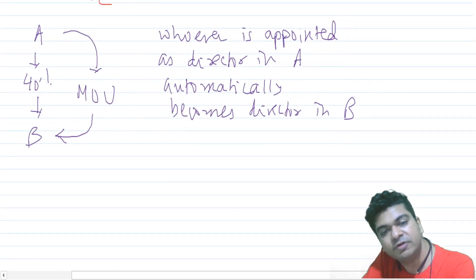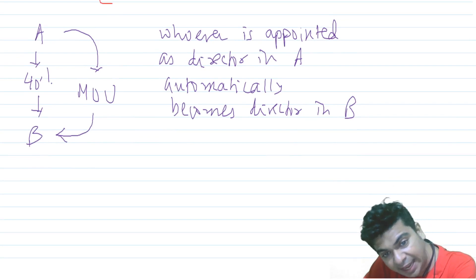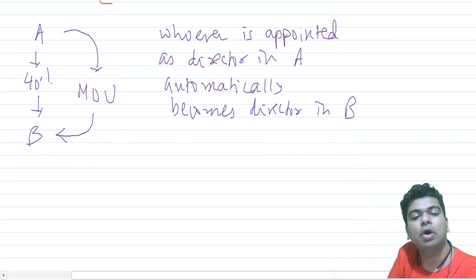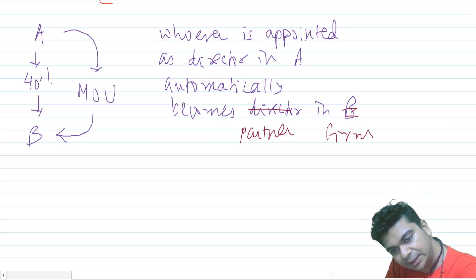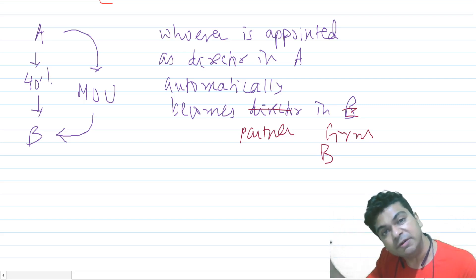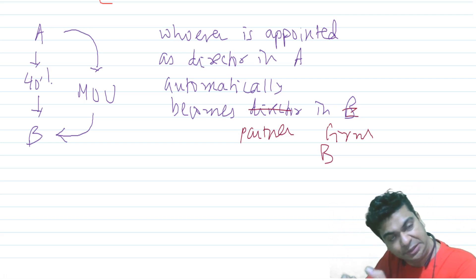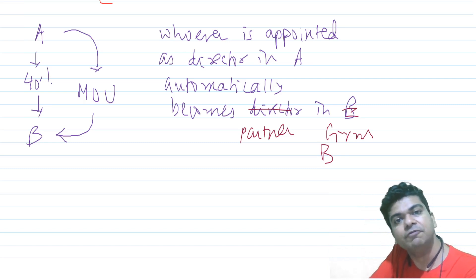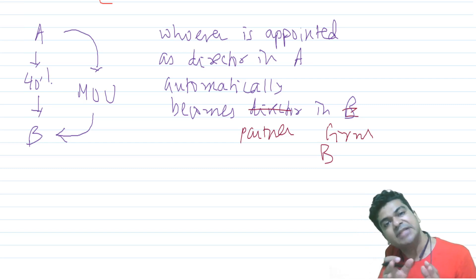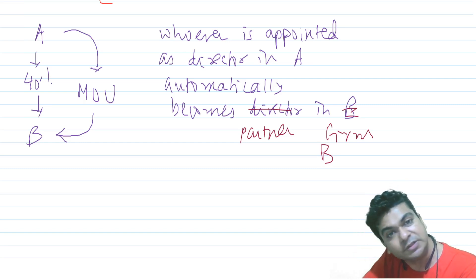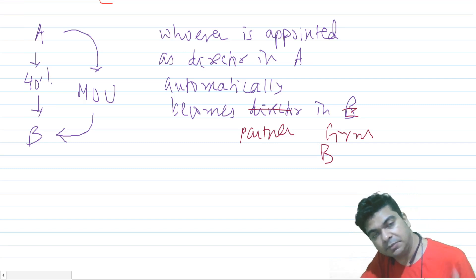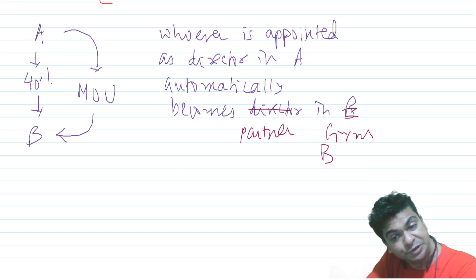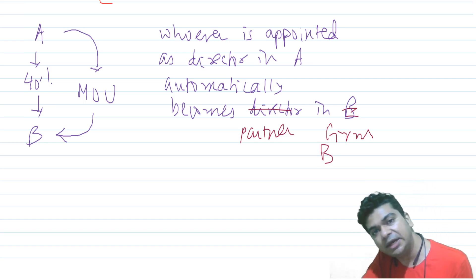In the case of a partnership firm, instead of becoming a director, whoever is appointed director in A automatically becomes a partner in firm B. If there are several partners and A is able to control that governing body of the partnership firm, that partnership firm will also become your subsidiary. Of course, in practice when solving questions, we will typically have a parent as a company and subsidiaries also as companies.